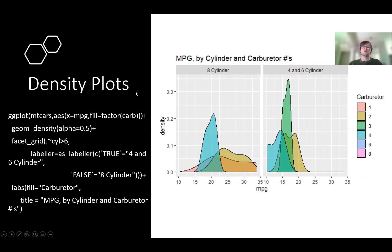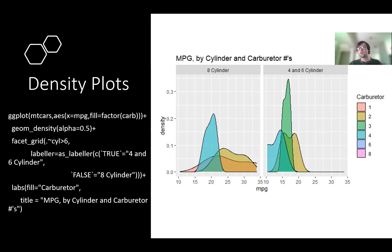We have ggplot loading the mtcars data, looking at miles per gallon on the x-axis, filling by carburetor number, then geom_density with slight transparency. The facet_grid here is faceting by whether the cylinder is greater than six or less than six — that's why we have this split. The labeler call is basically relabeling it to say four and six cylinder and eight cylinder, otherwise you would just have true and false at the top, which isn't very helpful. Then we have the labs call where fill is the legend title for carburetors and then the general title.